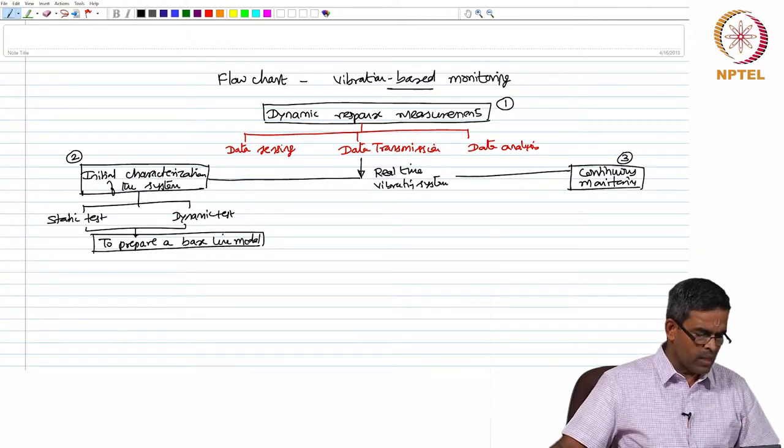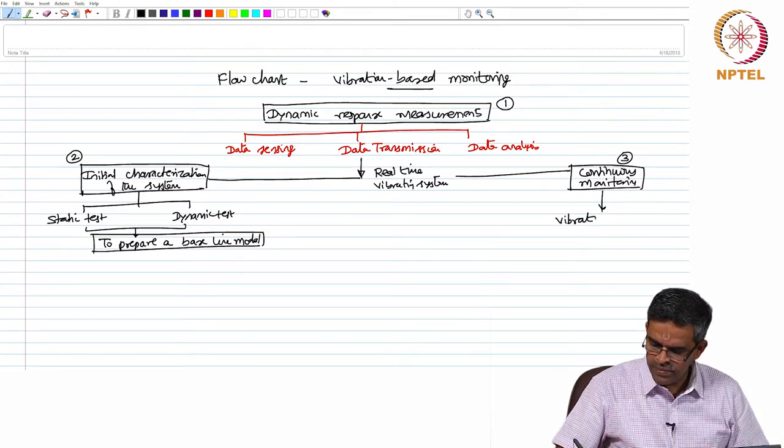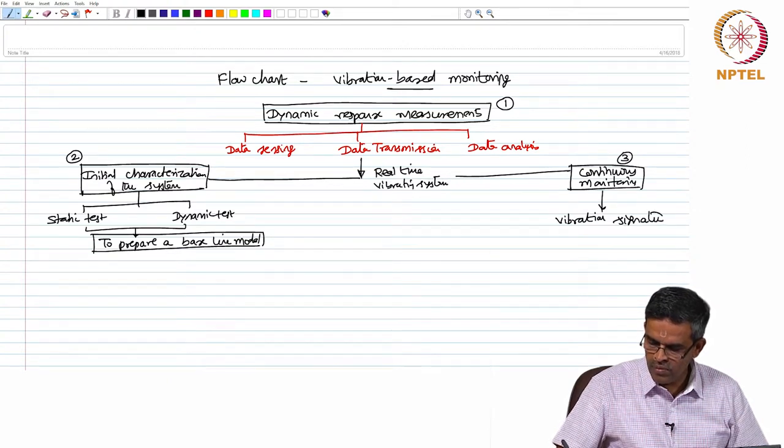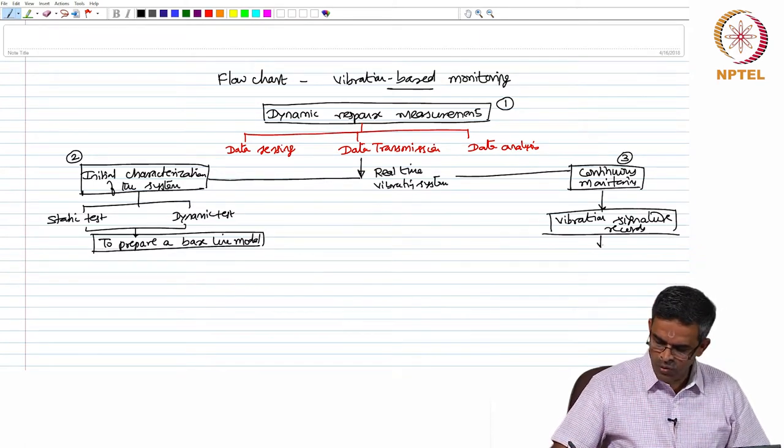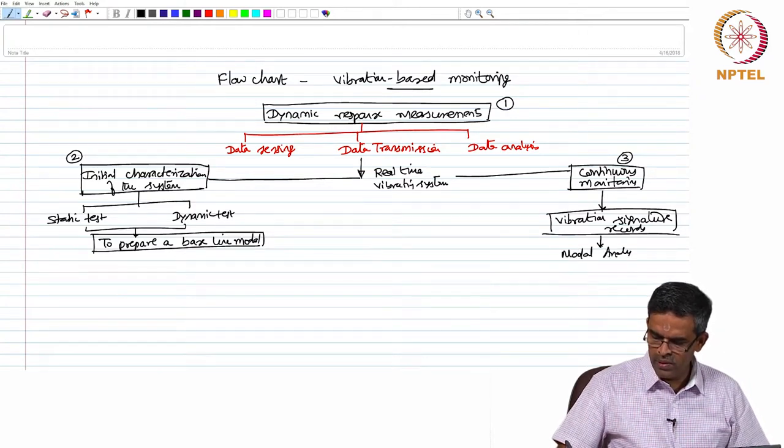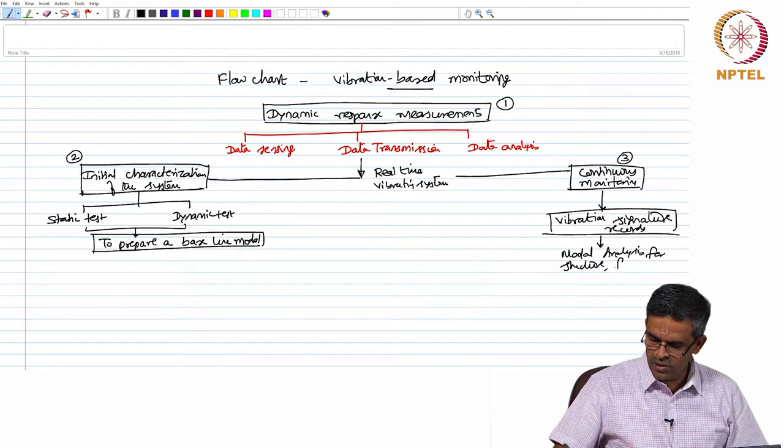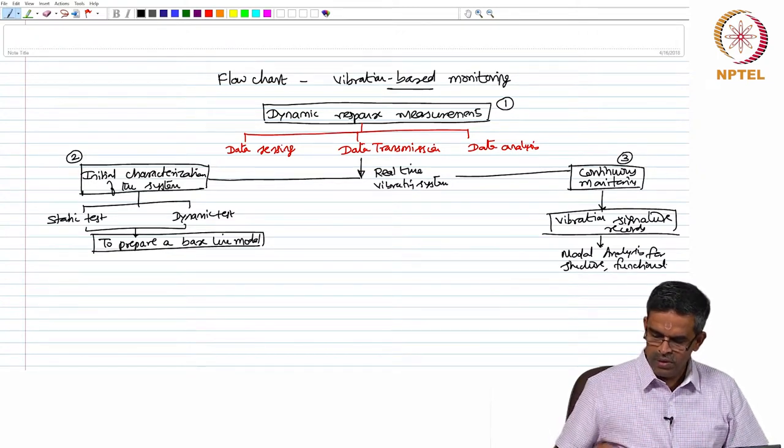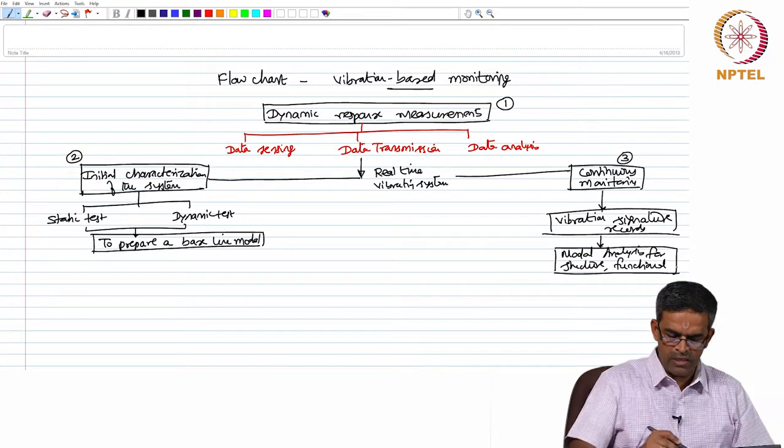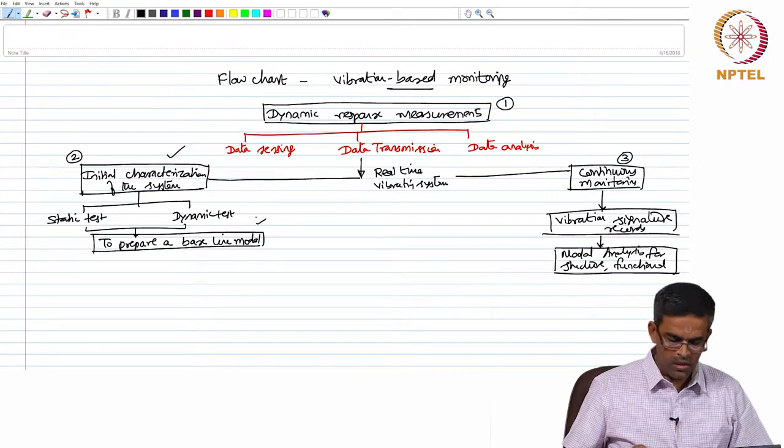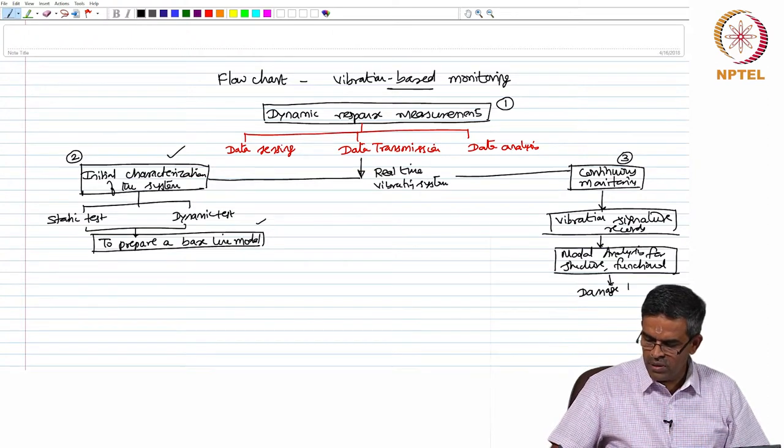Similarly, from the continuous monitoring, one can achieve the vibration signature records, which can be useful in doing modal analysis for structure which is functional, that is operational. This modal analysis for the structure under operation will be different from the conventional characterization of the system based on which the baseline model has been prepared. Based on this value, one can then achieve Damage Localization.